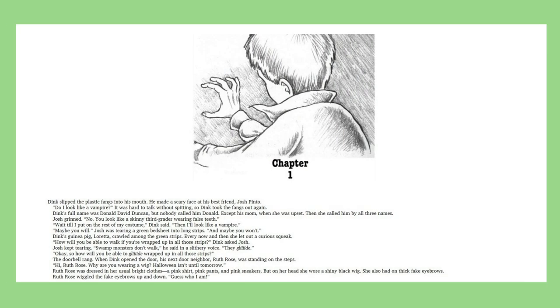Chapter 1. Dink slipped the plastic fangs into his mouth. He made a scary face at his best friend Josh Pinto. Do I look like a vampire? It was hard to talk without spitting, so Dink took the fangs out again. Dink's full name was Donald David Duncan, but no one called him Donald except his mom when she was upset. Then, she called him by all three names. Josh grinned. No, you look like a skinny third grader wearing false teeth. Wait till I put on the rest of my costume, Dink said. Then, I'll look like a vampire. Maybe you will. Josh was tearing a green bed sheet into long strips. And maybe you won't.